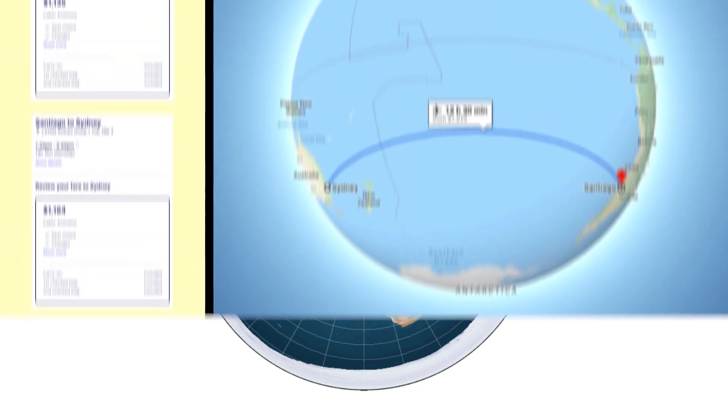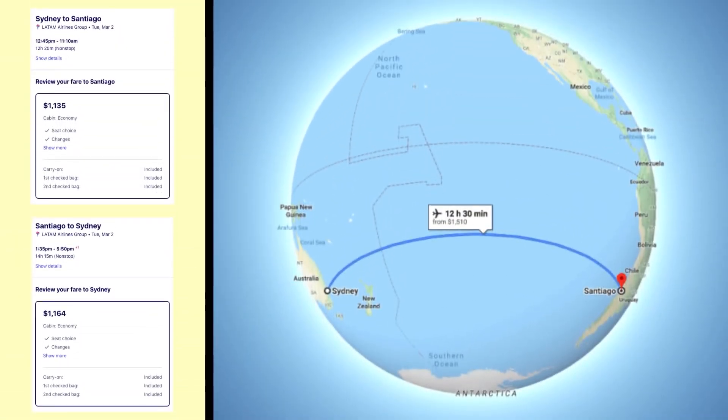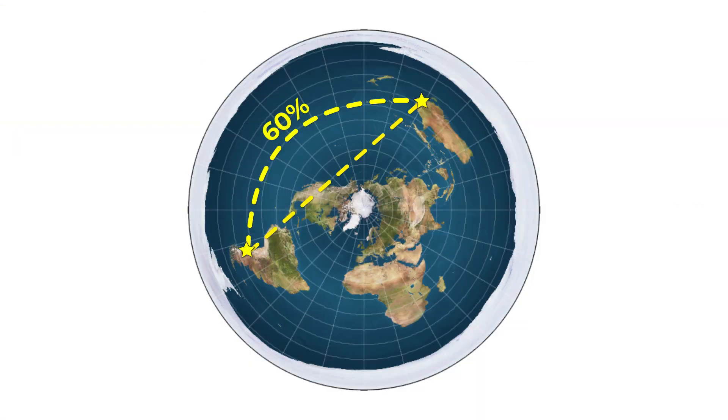Of course not. They fly a straight line across the Pacific Ocean. On a spherical Earth, this makes perfect sense, but on a flat Earth, that route would be almost 60% longer.